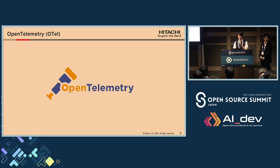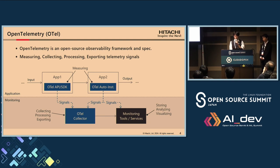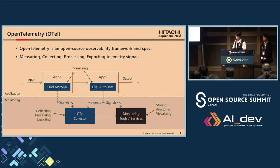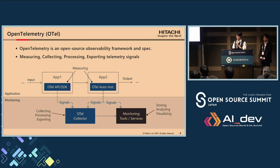We believe that OpenTelemetry might be suitable for this issue. OpenTelemetry, also known as OTEL, is an open source observability framework and specification. The OTEL framework provides two primary components: the measurement library and the OTEL collector. The measurement library can be integrated into an application by SDK or attached as an auto-instrumentation agent. The telemetry data collected by this library is then sent to the OTEL collector.